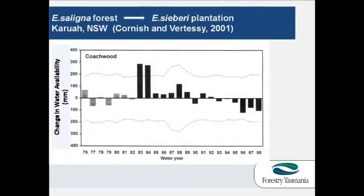We have another example from the Karua forests in New South Wales where a native forest was replaced with a Eucalyptus saligna plantation. In the first approximately ten years after planting you can see there is an increase in water supply, primarily because the young trees have not yet grown to a size where their water use matches that of the pre-existing forest. But after about ten years you get a decline in water availability within that forest type.